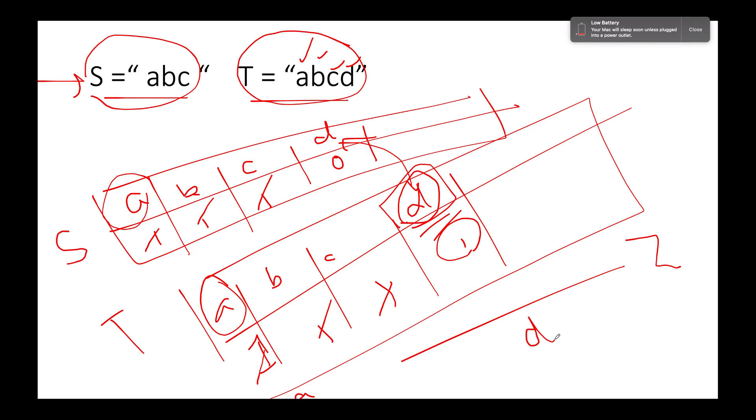Let's talk about the next approach. The time complexity of this approach is length of T. And the space complexity is equal to 26 characters. We are storing the frequency of 26 characters. As a result of which, the space complexity becomes constant.